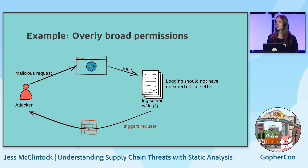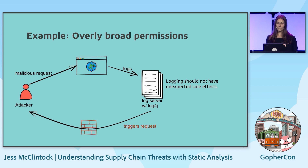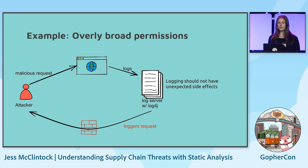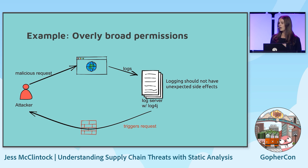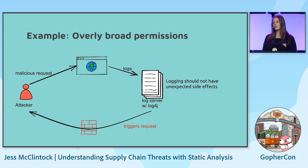As an example of overly broad permissions: back in 2021, the widely used log4j library was found to have a remote code execution vulnerability. This was actually well-intended, intentional code added to the package that turned out to be easily abusable by attackers. An attacker could construct a string in a request, and when that string was logged, it would cause a JNDI lookup which would read code from a potentially attacker-owned host and execute it — clearly well out of scope of what you'd expect a logging library to do.